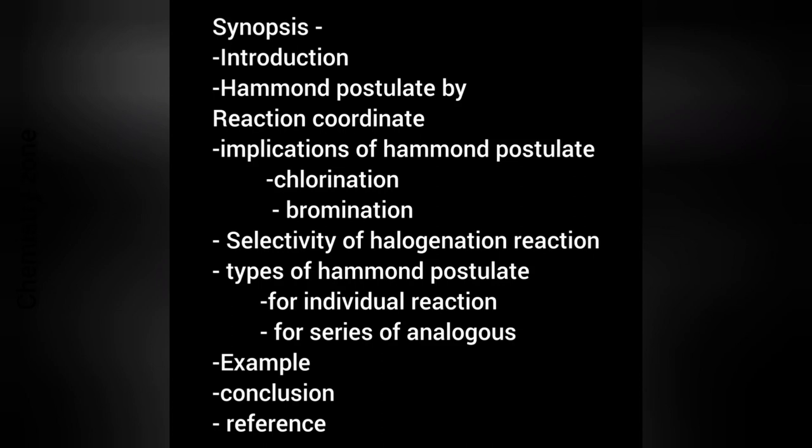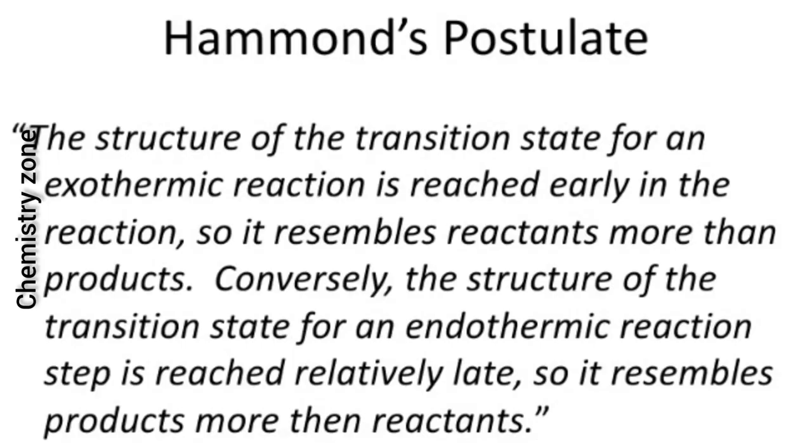First of all, we are going to discuss the synopsis. We will study the introduction of Hammond's Postulate, Hammond's Postulate by reaction coordinate, implications of Hammond's Postulate which include chlorination and bromination, selectivity of halogenation reaction, types of Hammond's Postulate for individual reaction and series of analogous reactions, example, summary, conclusion, and reference.